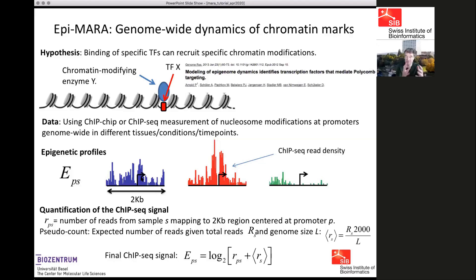If we get ChIP-seq measurements of histone modifications, we map these to promoters genome-wide and quantify in each promoter and each sample the strength of the particular histone modification — essentially the log of the density of reads for that chromatin modification in a 2kb region centered at each promoter across the samples. As a specific example, we looked at H3K27 trimethylation — the trimethylation of lysine 27 on histone 3 — which is a well-known modification deposited by the Polycomb pathway.